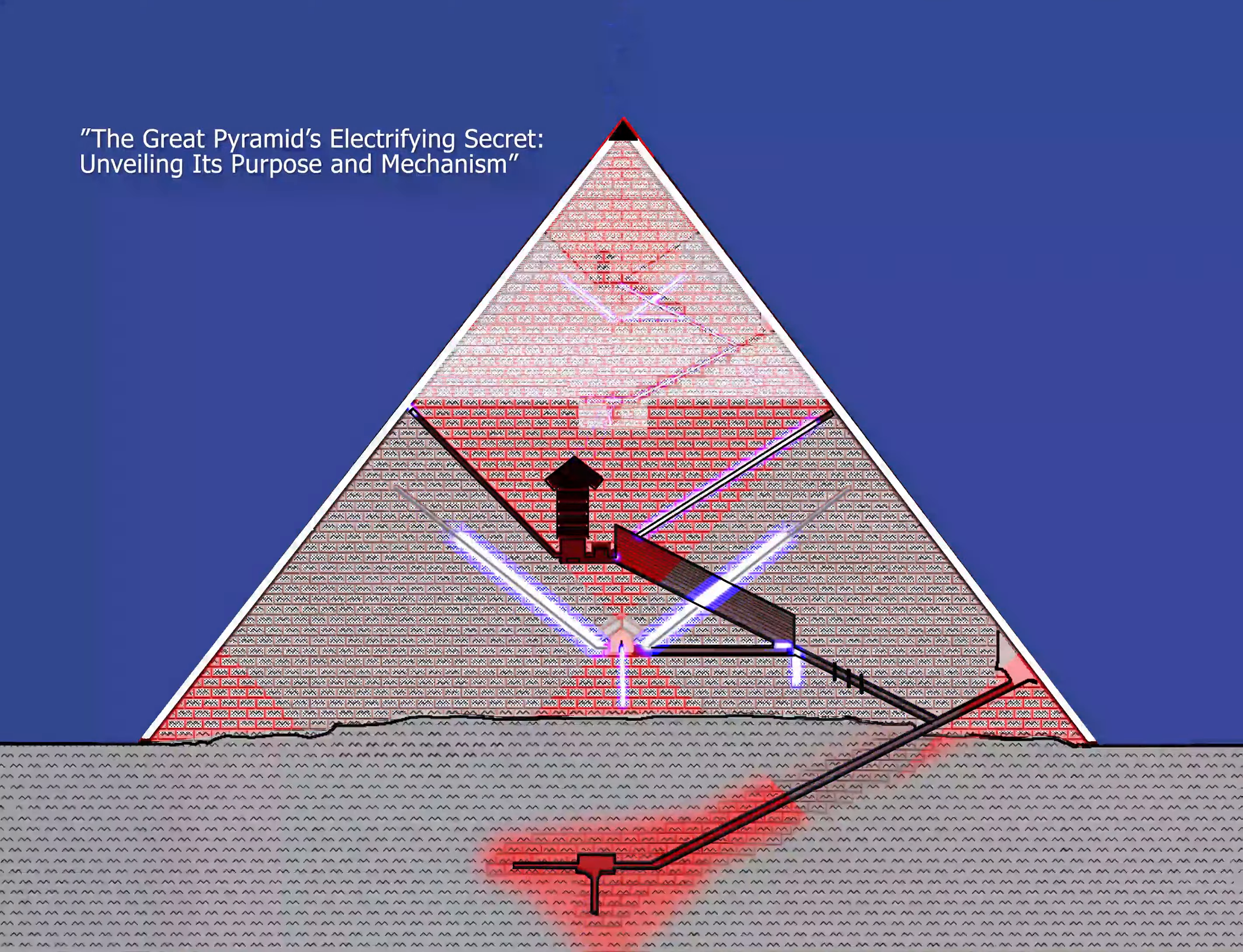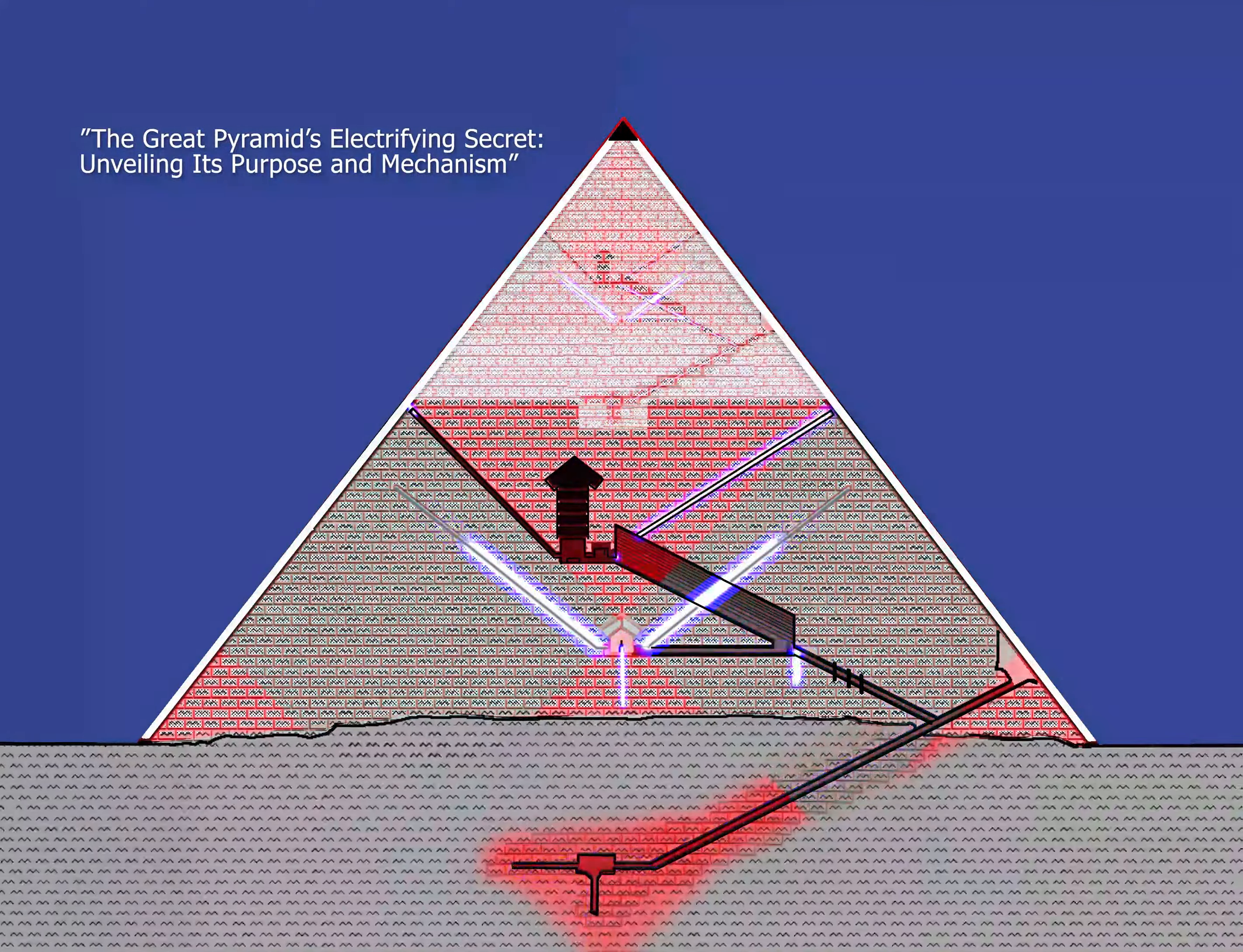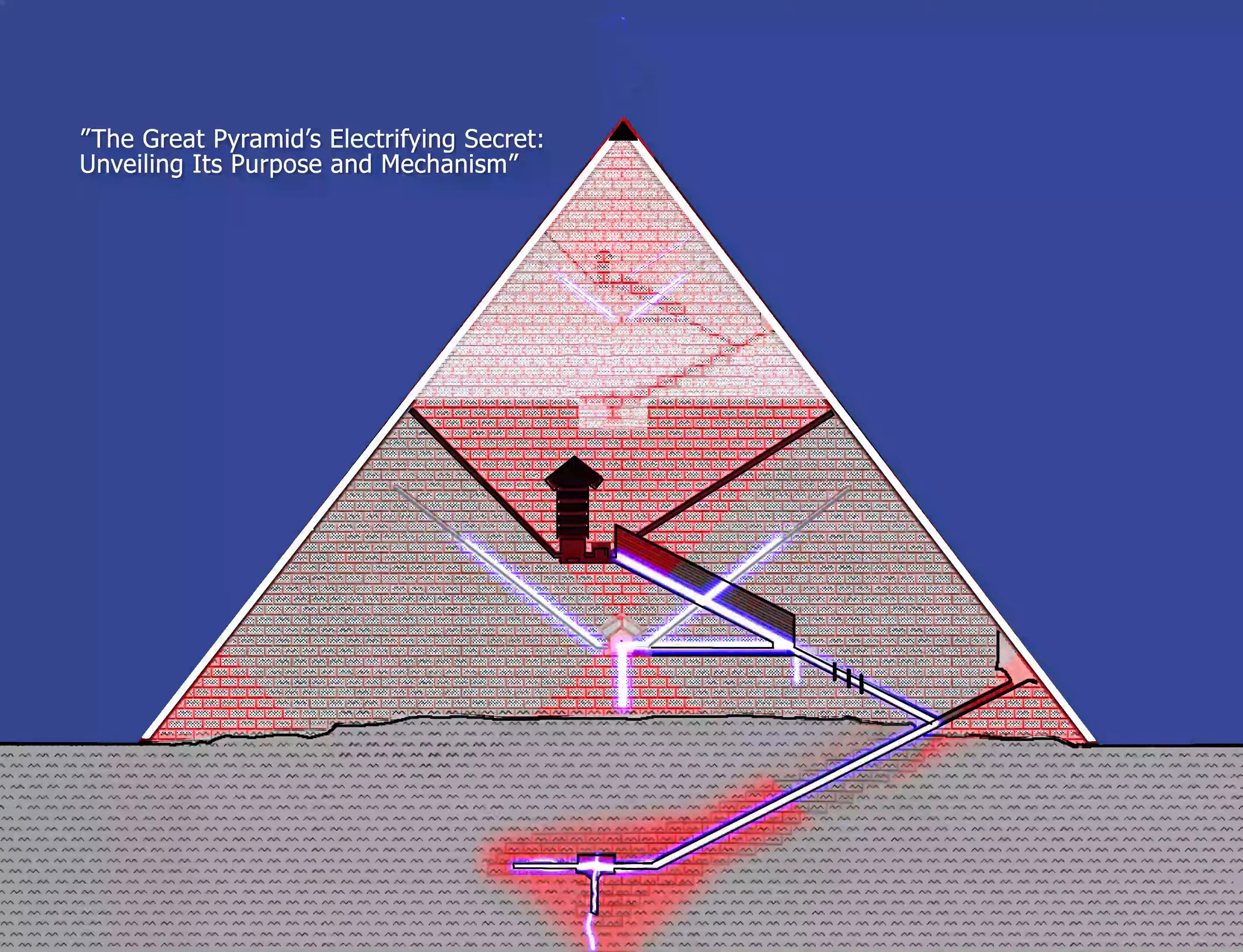One of the functions of the Great Pyramid is considered to be the conversion of static electricity into an electric current.